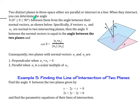Two distinct planes in 3-space either are parallel or intersect in a line. When they intersect, you can determine the angle theta, where theta is between 0 and 90 degrees, between them from the angle between their normal vectors, as shown below.